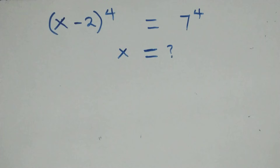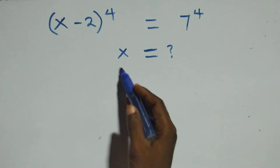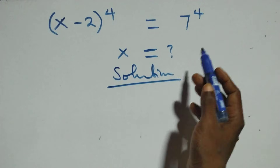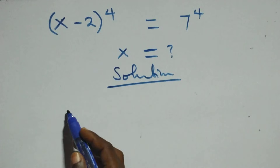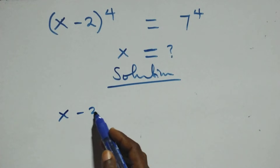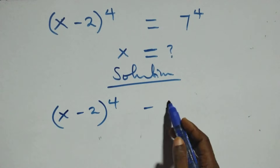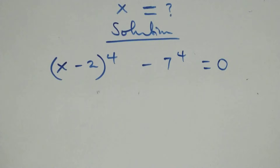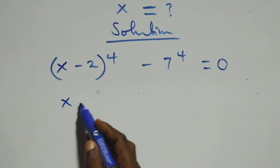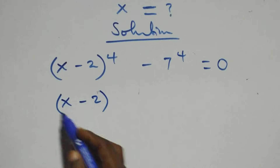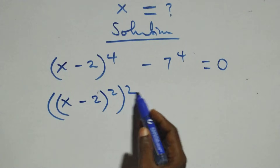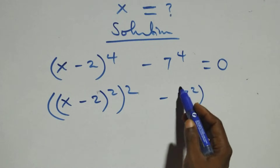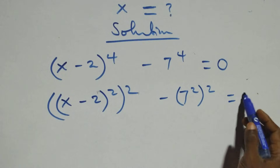Hello, you are welcome. We will solve this nice exponential equation. We can take 7 raised to the power 4 to the left hand side, giving us (x minus 2) raised to the power 4 minus 7 raised to the power 4 equals zero. We can rewrite this as (x minus 2) squared, squared, minus 7 squared, squared, equals zero.